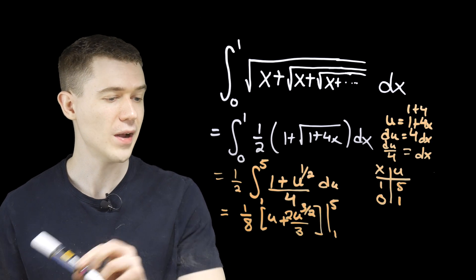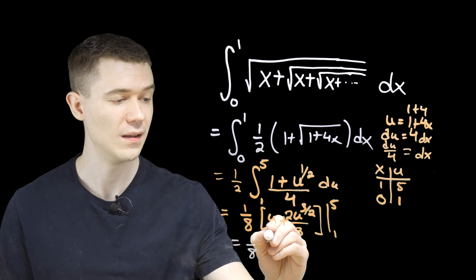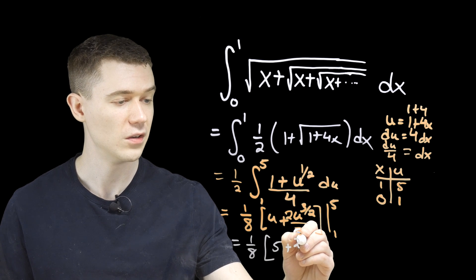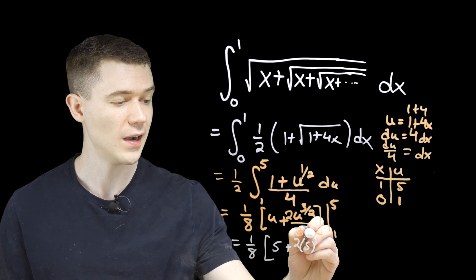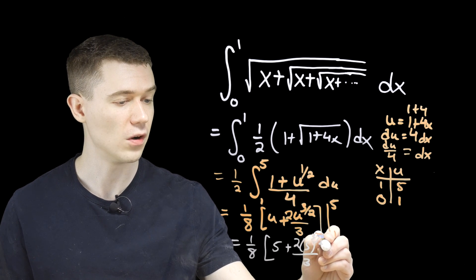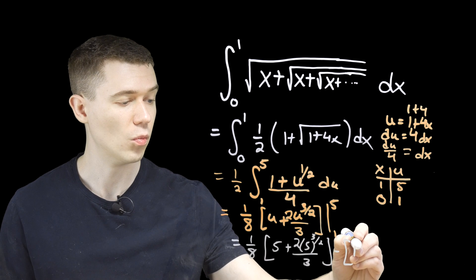So I think if we go ahead, we can just plug these in. One eighth. Five is for u plus two times five to the three halves over three. And then this is all minus plugging in one. One plus.